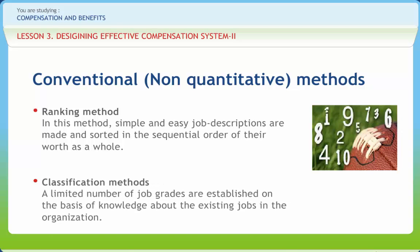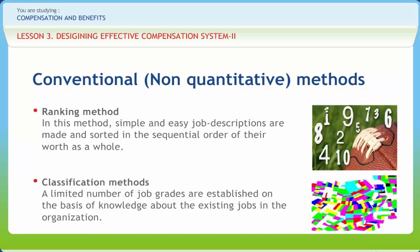The classification method is sometimes called the predetermined grading method. A limited number of job grades are established on the basis of knowledge about the existing jobs in the organization. Each of these grades is defined in terms of general functions and qualifications required. This is followed by development of job descriptions which briefly state the nature of duties of each job.